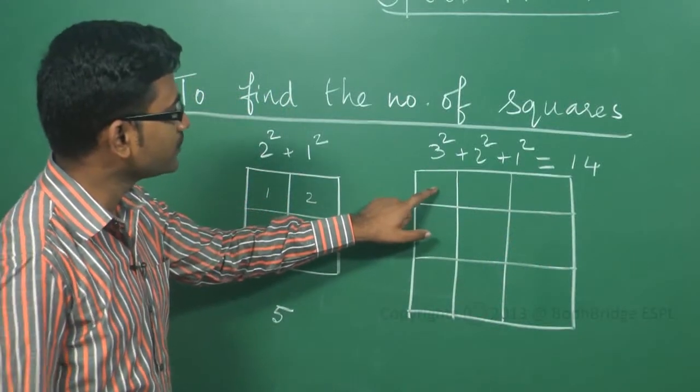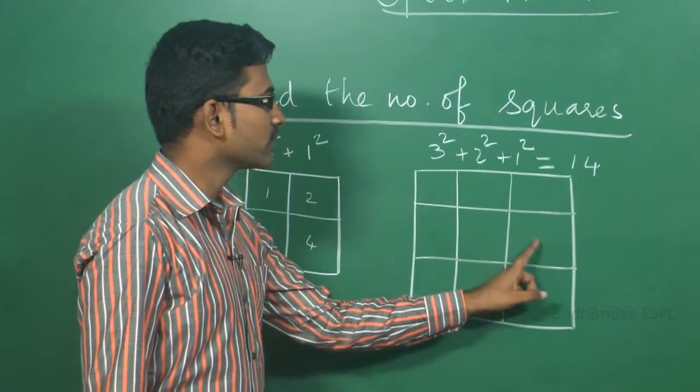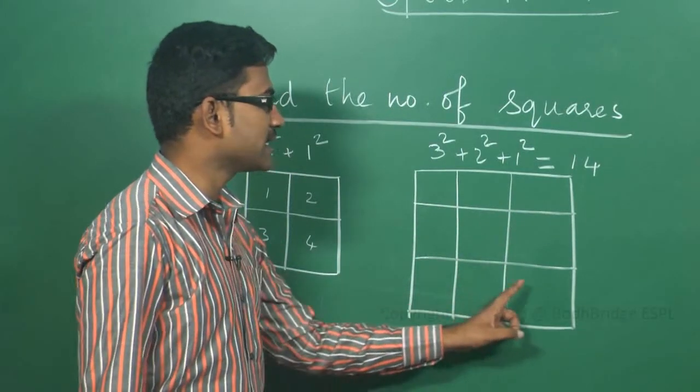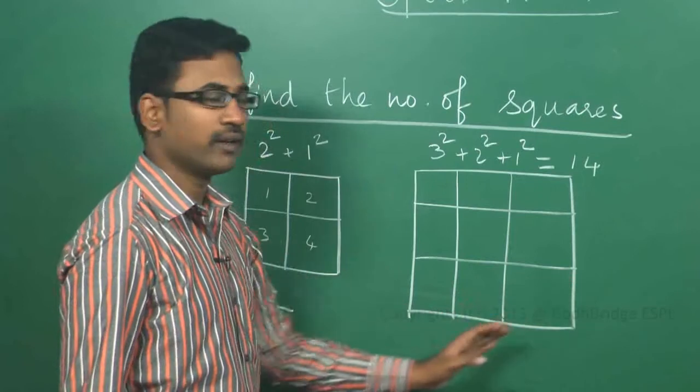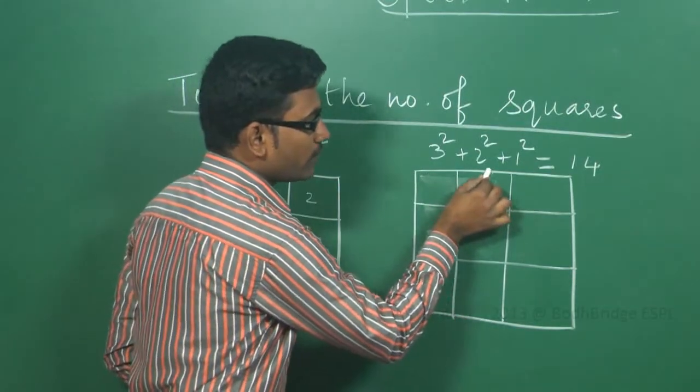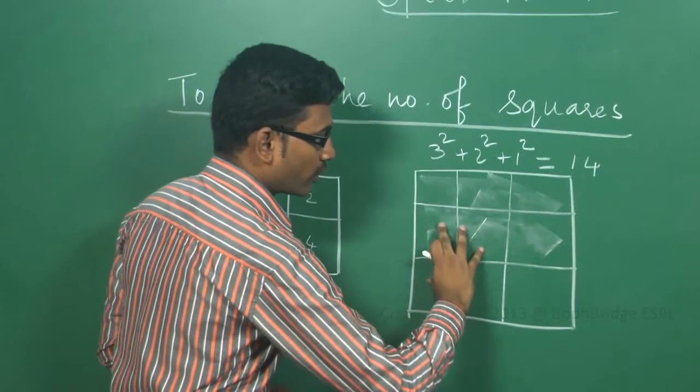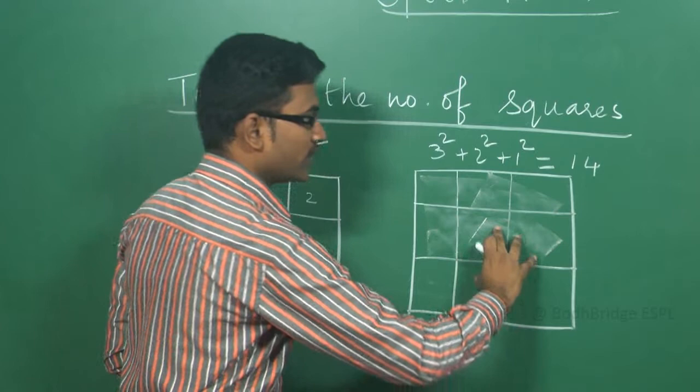I will count this 1, 2, 3, 4, 5, 6, 7, 8, 9 and the 10th one, 11th one will be of this, 12th one will be of this, 13th one will be of this, 14th one will be of this square.